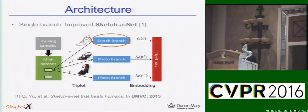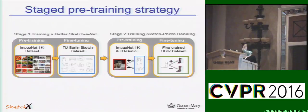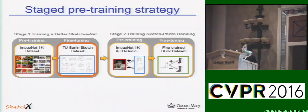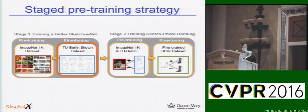We try to solve the data sparsity problem by introducing two methods. The first is staged pre-training, where we divide training into two stages: first training a single branch, then training the triplet ranking model. Each stage contains two steps — pre-training and fine-tuning. For the single branch, we first pre-train SketchNet on ImageNet 1000, then fine-tune it on the TU Berlin sketch dataset. However, the TU Berlin dataset is much smaller than ImageNet 1000. So apart from traditional augmentation methods like rotation and flipping, we introduced two novel sketch-specific data augmentation methods to enlarge the training data volume.